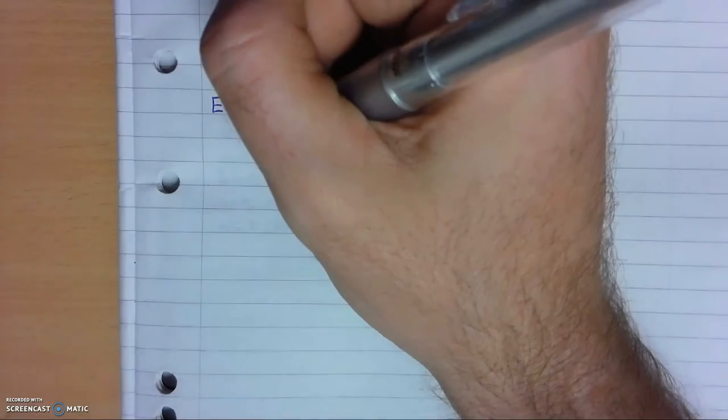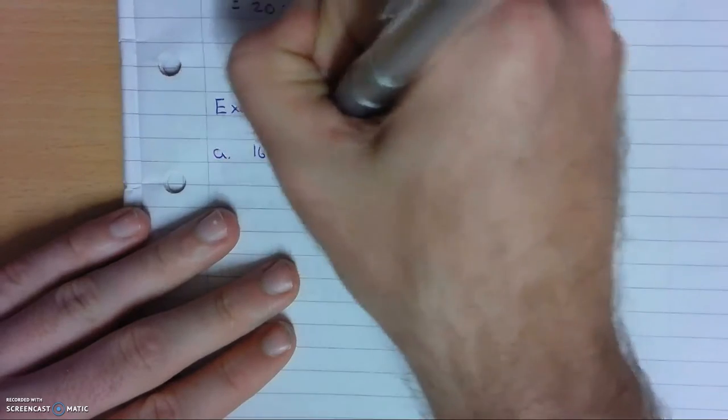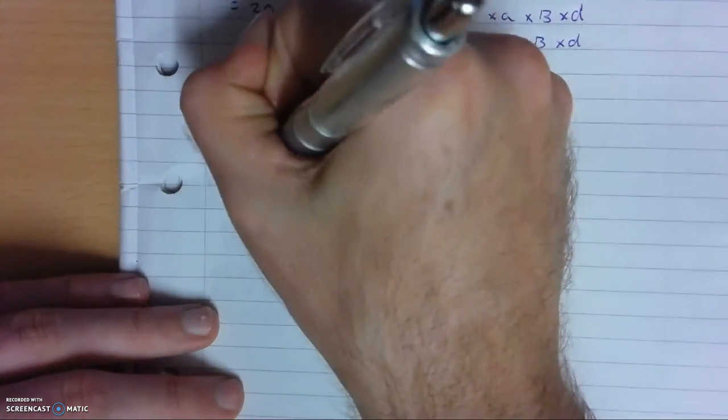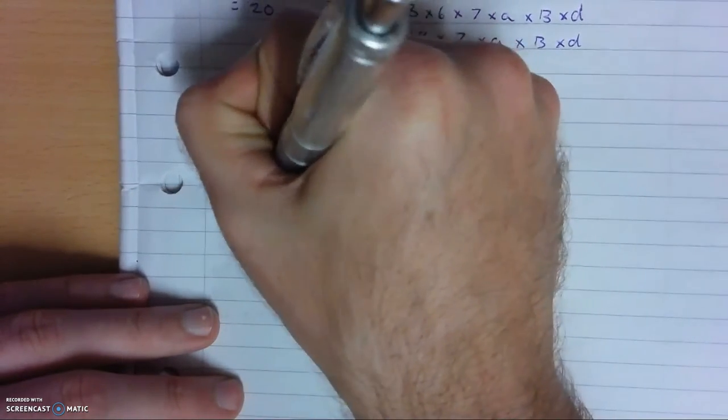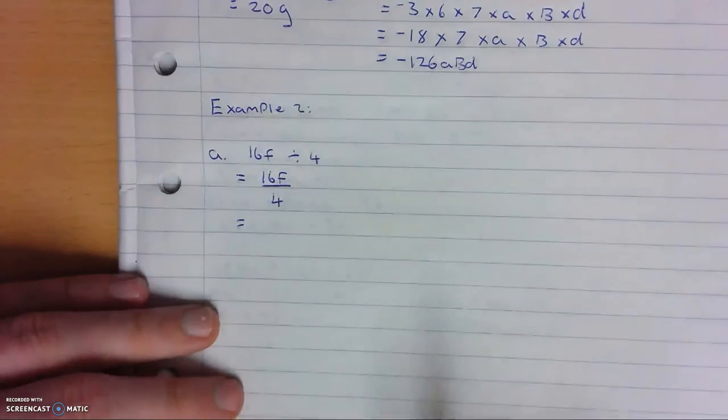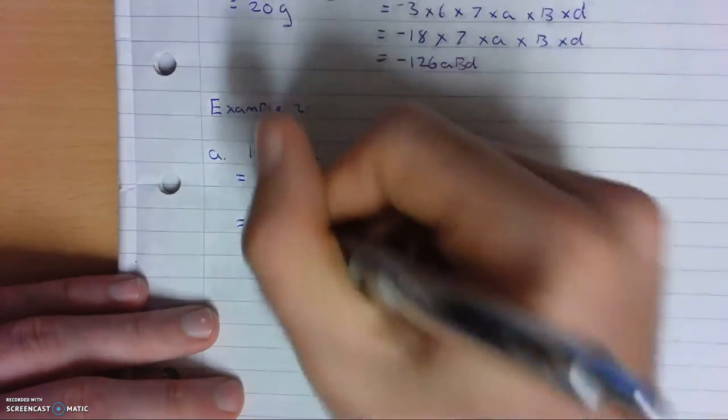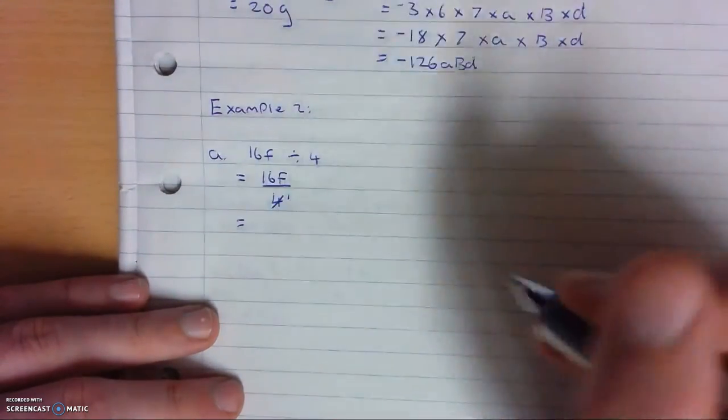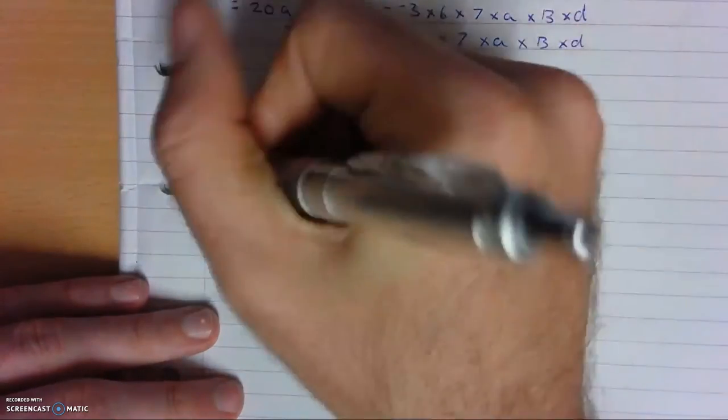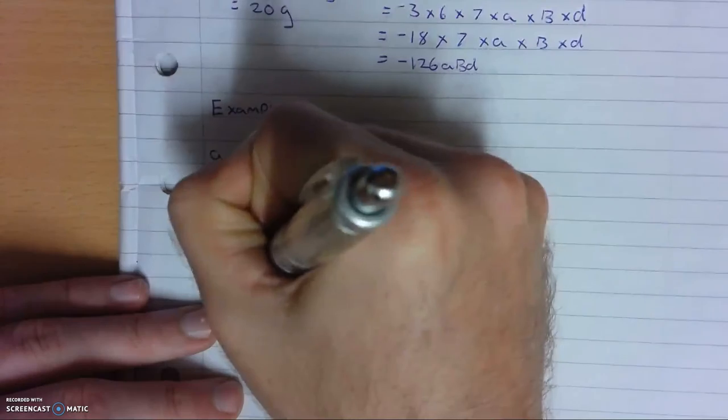So for division we can do 16f divided by 4. So what we do is we write in fraction form, so how we do that is we put 16f over 4, and then we just cancel out. So we need to find the highest common factor of both 4 and 16, which would be 4. So how many times does 4 go into 4? 4 go into 4 once. How many times does 4 go into 16? 4 go into 16 four times. So the answer would be 4f over 1, which is the same thing as 4f.